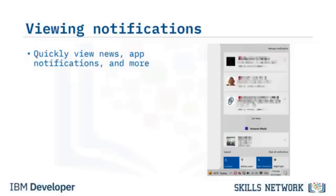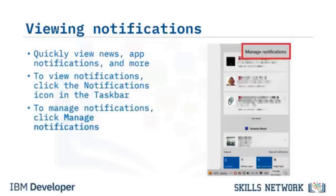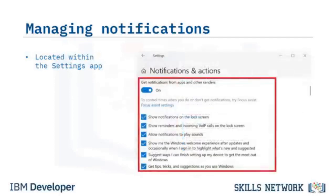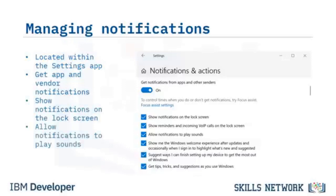Notifications are a convenient way to view news, receive app notifications, and more. On the taskbar, click the Notifications icon to display your notifications. Click Manage Notifications to customize what you see. This opens the Notifications and Actions section within the Settings app, where you can set preferences including app and vendor notifications, notifications on the lock screen, allowing sounds, and other settings.